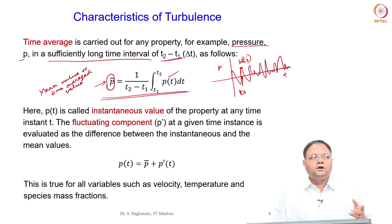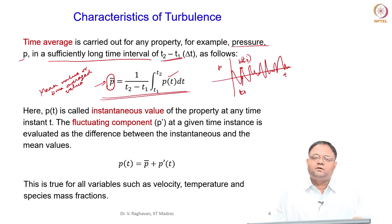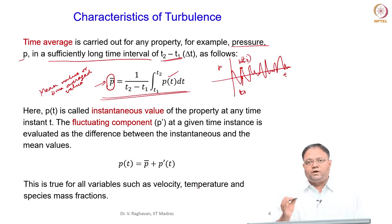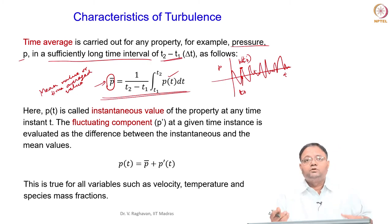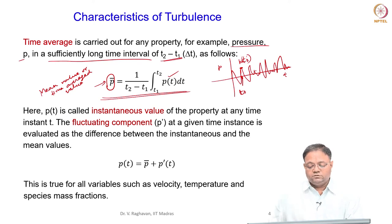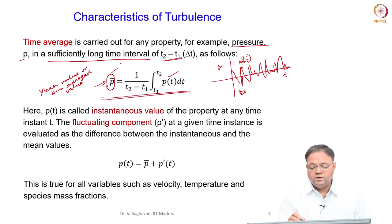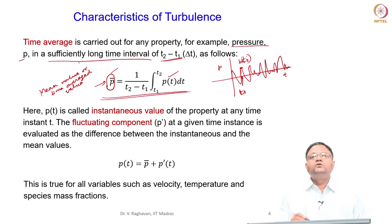If you take 1-minute and 2-minute time period averages, the resulting means will differ from each other, but for 5-minute and 10-minute averages they may not vary. A sufficiently long time interval is one that captures all the frequencies present in the oscillations. When this is done, you get a proper mean value that does not change with the averaging interval.